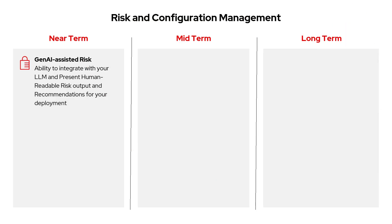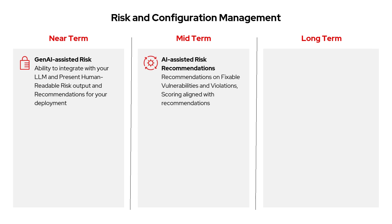On to risk and configuration management, where we're working on using AI to deliver risk recommendations for deployments. Building on our current integration with Red Hat Developer Hub for vulnerability insights, we plan to expand this to cover all types of security risks. These AI-driven recommendations will use the ACS APIs together with large language models to show insights directly in the ACS dashboard, similar to how OpenShift Lightspeed integrates today.